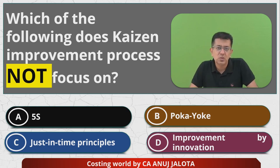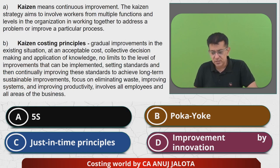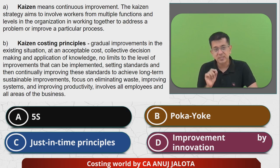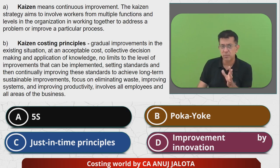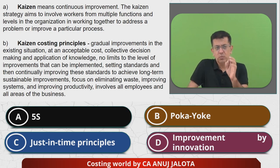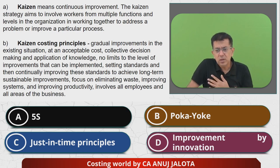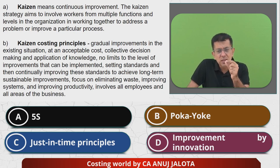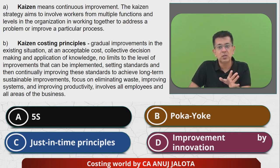What do you mean by Kaizen costing? Kaizen is a Japanese word which stands for small little steps taken every day that, in the long run, help you to reduce your cost to a great extent. Kaizen itself means continuous improvement. The Kaizen strategy aims to involve workers from multiple functions and levels in the organization to work together to address a problem or improve a particular process. Your costs are high, so you do every small thing now and then to reduce cost — say, within one year I will be able to reduce cost by five percent.